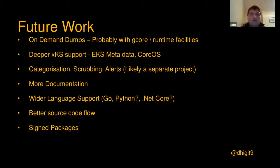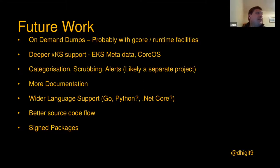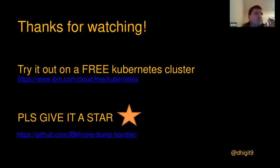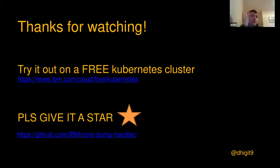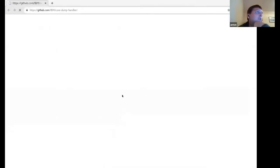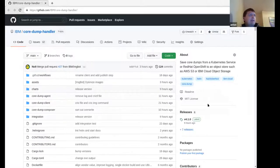Hopefully that was interesting. Even if you got nothing else out of it as a Rust developer, you've got a 101 of how you can debug when core dumps happen and how it can be useful. If you're using Kubernetes there's even more value. If you want to try it out, you can sign up for a free cluster at IBM Cloud, and I'd really appreciate a star on the project on GitHub - I'm currently up to 21 stars and the more stars I get the more time I get to work on it.